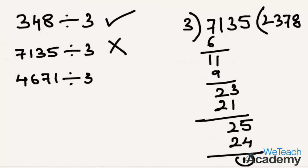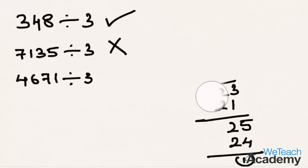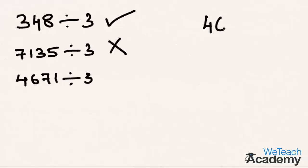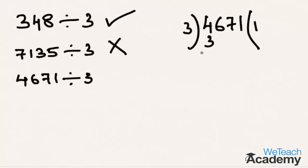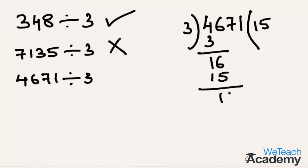Now let us consider the third example — let us divide the number 4671 by 3. Now 3 times 1 is 3, and 4 minus 3 is 1. Bringing down the next digit, that is 6, we get 16. So 3 times 5 is 15, and 16 minus 15 we get 1. Then bringing down the next digit, that is 7, and 3 times 5 is 15, so 17 minus 15 we get 2.